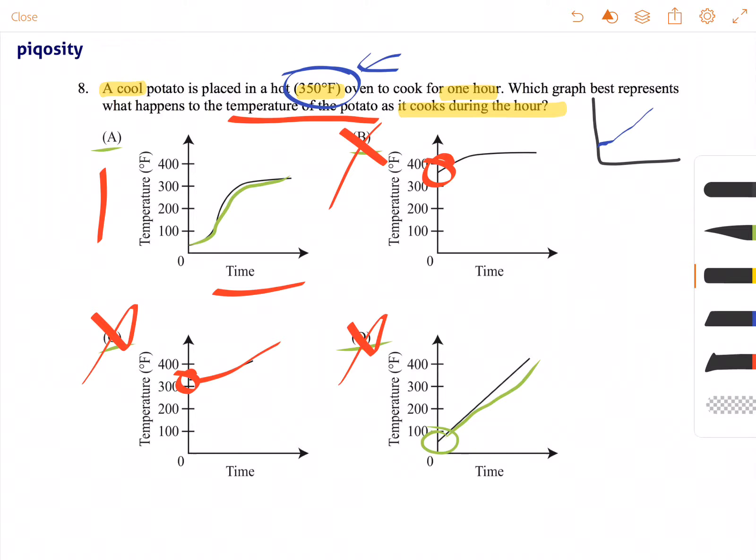So just because of that, the only graph that makes any sort of sense is answer choice A.